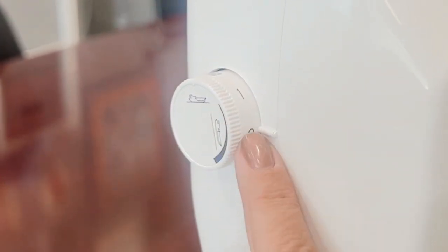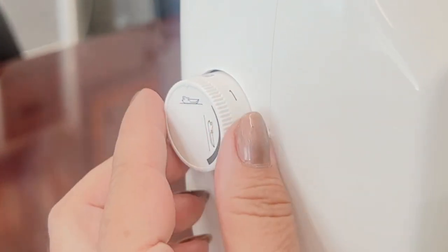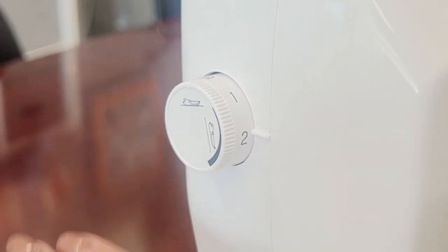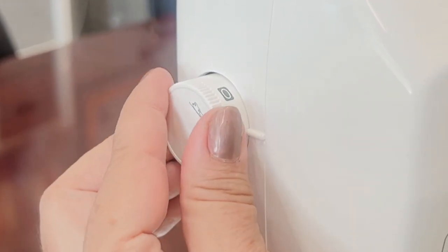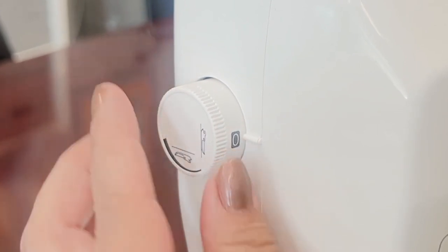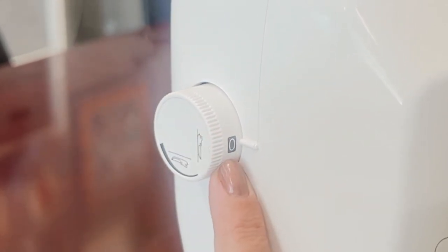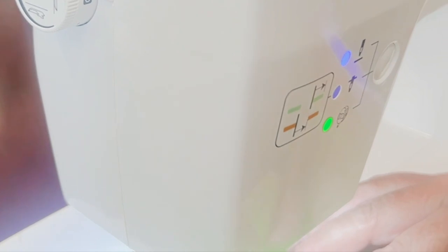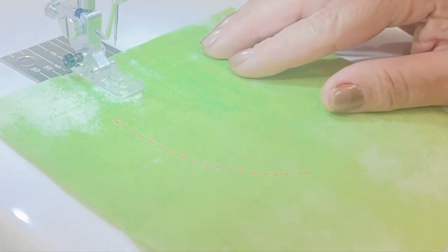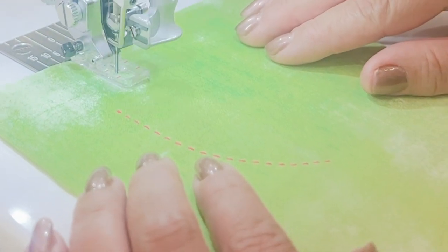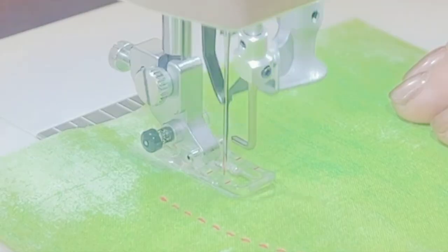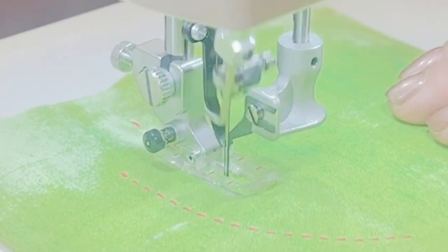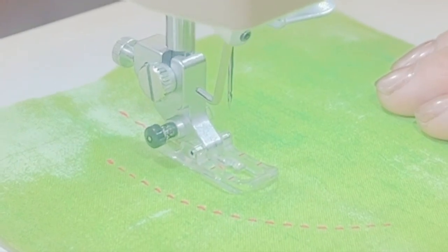Right here is a dial and this is your presser foot dial, and this is how high or how low your presser foot goes. If I'm just doing straight stitching, I'm going to keep it at its lowest level, which is a zero. So now let's take a look at the needle and begin stitching.